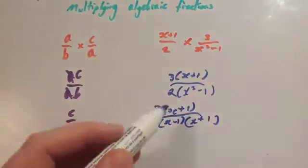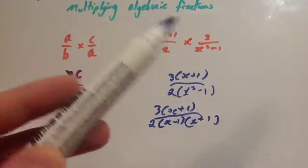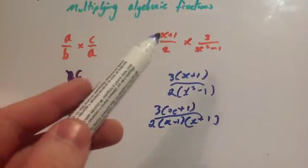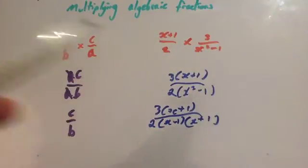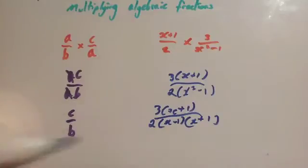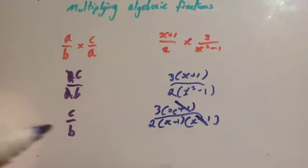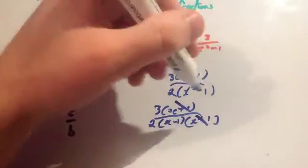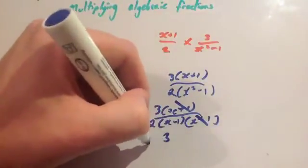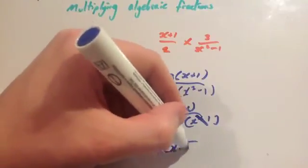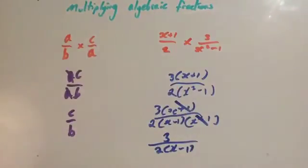You'll see here that now things will cancel out. So, whenever you're timesing things with more than one term on the numerator and the denominator, keep them in brackets and then try to factorize anything and then see if things cancel. So, this X plus 1, cancel this X plus 1. So, your answer is going to be 3 over 2 bracket X minus 1. And that's it.